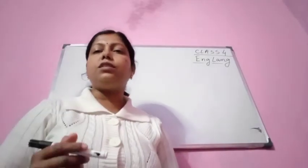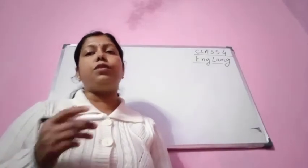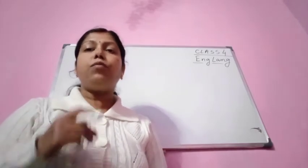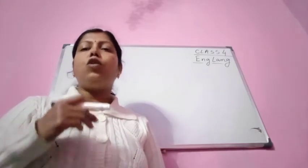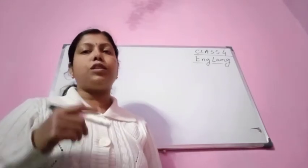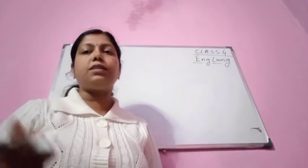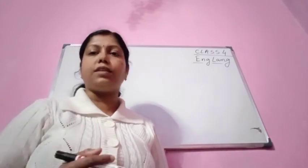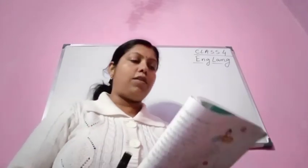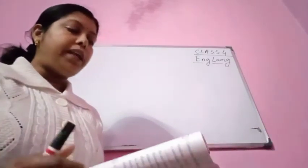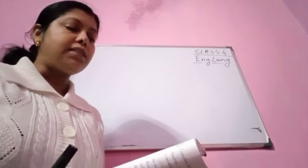So what are conjunctions? Conjunctions are words that combine words, groups of words, or sentences. We have already studied about all these things. Now take the sentences that make sense.